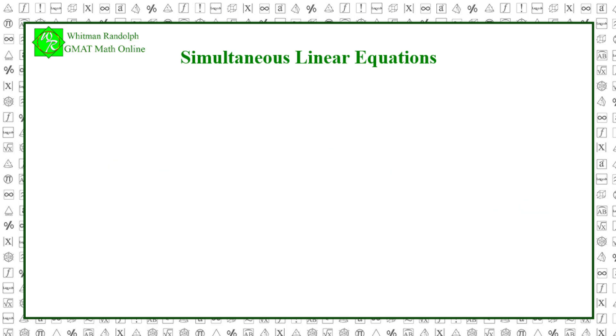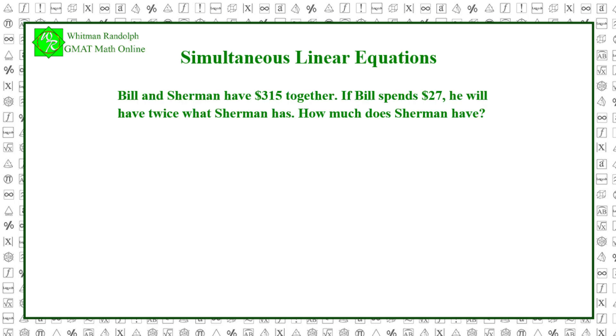Here are some sample simultaneous equation problems. Bill and Sherman have $315 together. If Bill spends $27, he will have twice what Sherman has. How much does Sherman have? And here are some possible answers. Let's find the solution.